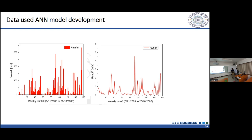Another question from the chat: how do you choose the best ANN structure? The number of layers and nodes is chosen through trial and error. We go with the maximum number of hidden neurons initially, and found that one hidden layer was sufficient — adding more layers increases computational burden and while calibration performance may improve, validation performance will fail. So trial and error is used to choose the best ANN structure.